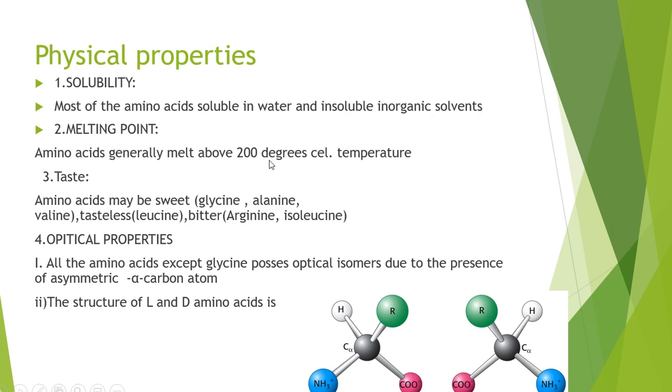Coming to the melting point, amino acids generally melt above 200 degree centigrade temperature. That's the reason why proteins can tolerate high temperatures. For taste, some amino acids are sweet like glycine and alanine, some are tasteless like leucine, and some are bitter like arginine and isoleucine.